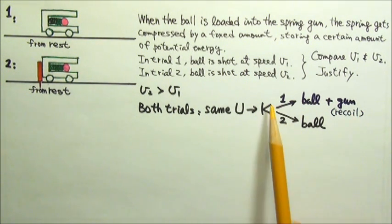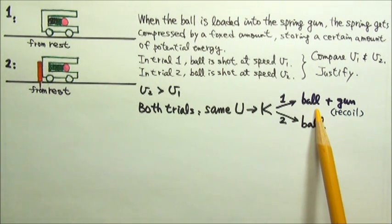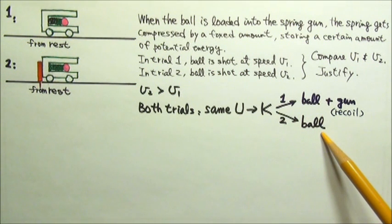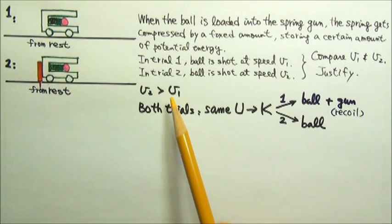Since these two have to share the same amount of energy, the ball does not get as much energy as it does in trial 2. Therefore, the ball gets a slower speed in trial 1.